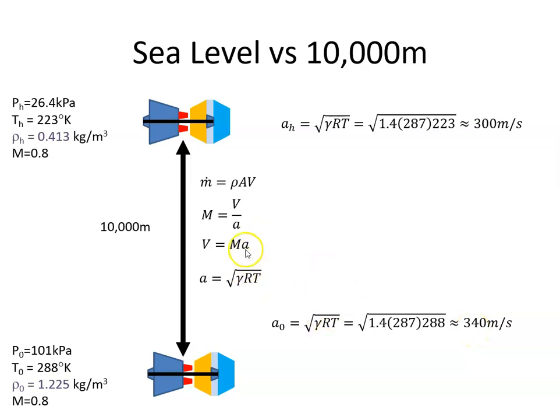I can then use that value and plug it into this equation here to get the velocity. So the true velocity of the engine at 10,000 meters is 0.8, the Mach number, times 300 which is 240 meters per second. And at sea level it's 272 meters per second.